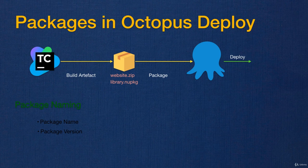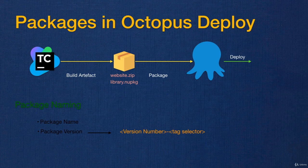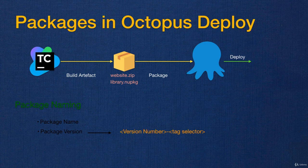Anything after the dot is the package version. Package version doesn't have to be just numbers — it can have letters as well, and it can have two parts or more. The package version can include a number like version 10, and it always ends with something separated by a dash or hyphen character. That last bit — anything after the hyphen — is called the tag selector, and using that we can filter packages based on the tag selector.